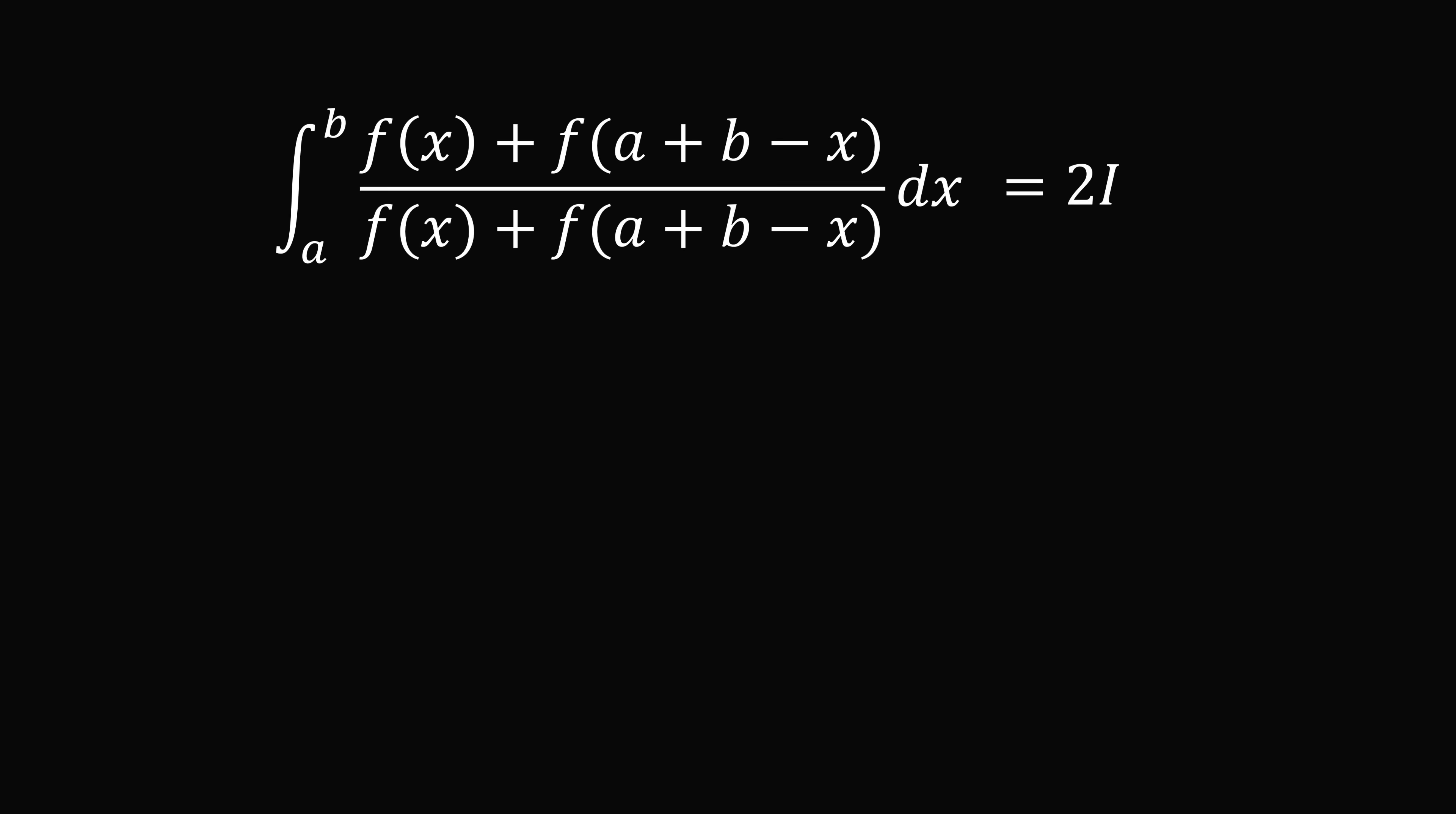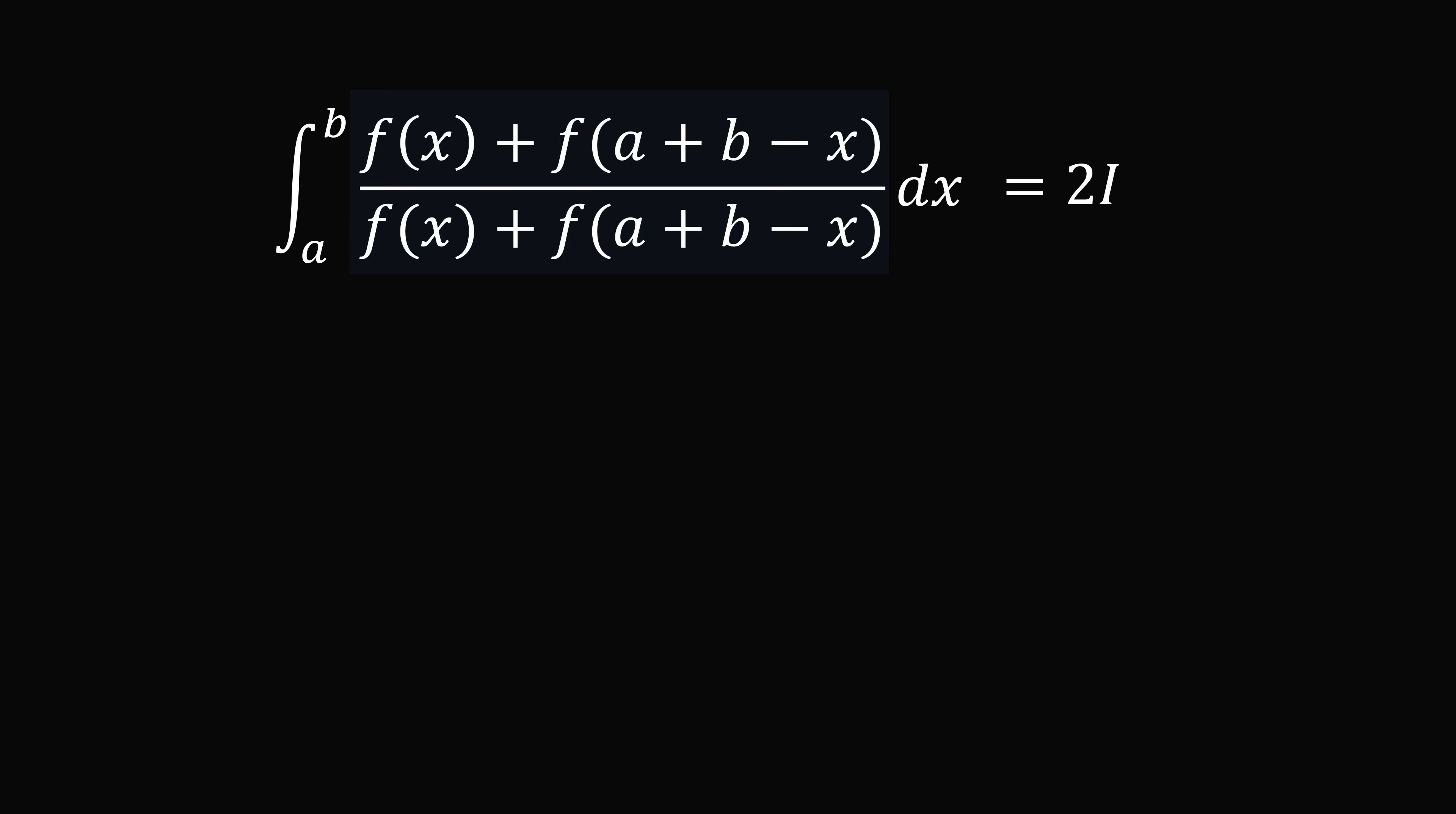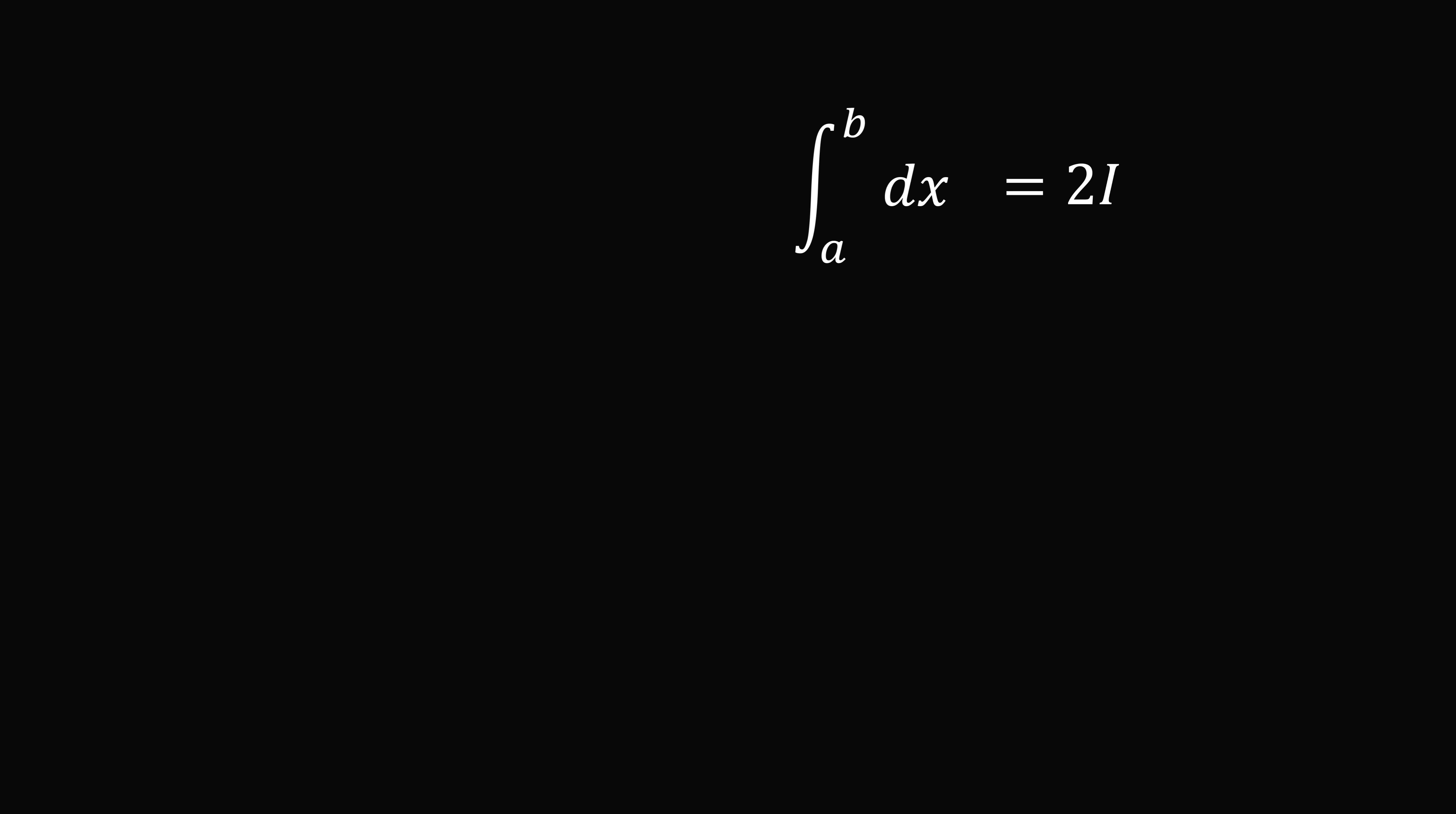Now we can simplify this. The numerator and denominator are exactly equal to each other, so they will vanish to be equal to 1. So the integral from a to b of dx, and that will evaluate just to be b - a. Dividing both sides by 2, we get that I is equal to (b - a) over 2, and that exactly proves the formula.